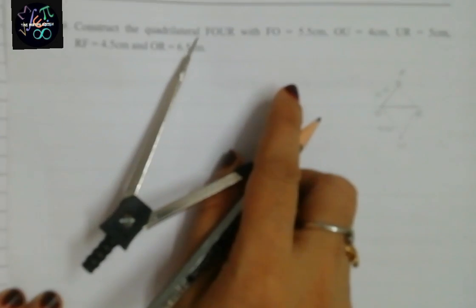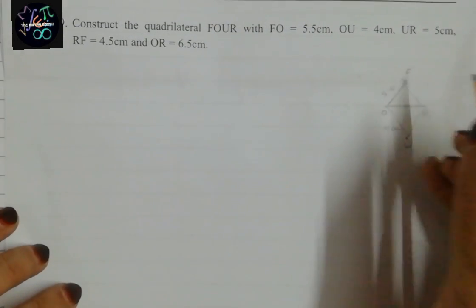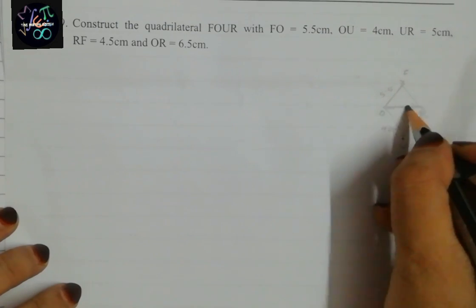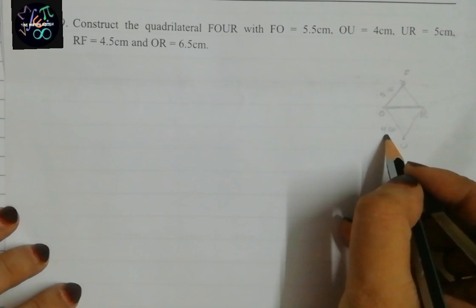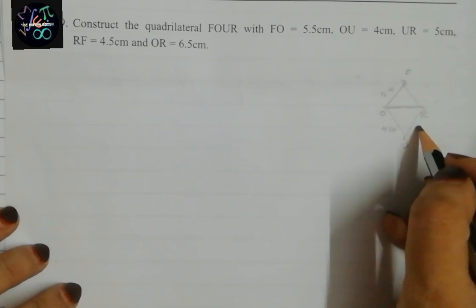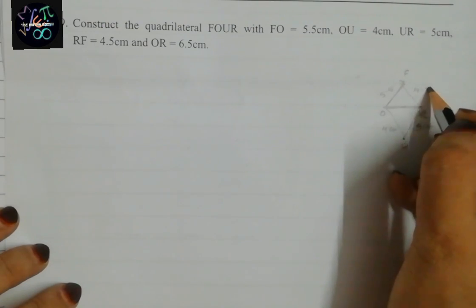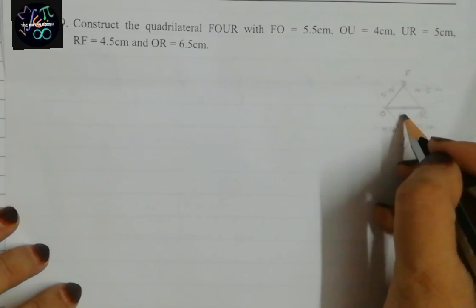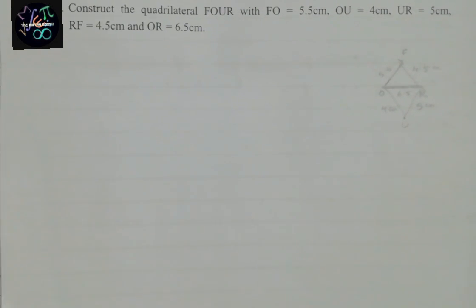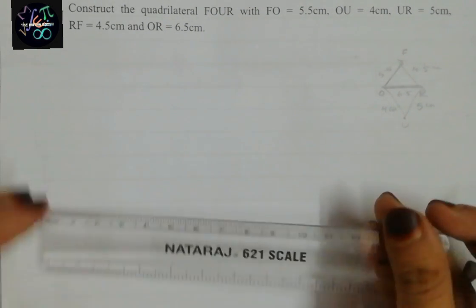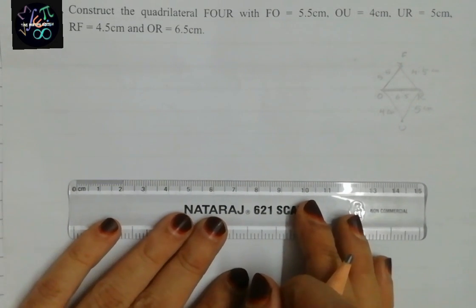In question number 29, construction of quadrilateral F-O-U-R. I have drawn a figure FOUR. What they have given: FO is 5.5 cm, OU is 4 cm, UR is 5 cm, RF is 4.5 cm, and OR is 6.5 cm. So let us first draw OR as 6.5 centimeter.